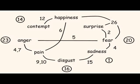Here's the graph. There are 8 emotions: happiness opposed to disgust, surprise to pain, fear to anger, sadness to contempt. You can see numbers, which are action units — muscles of the face.